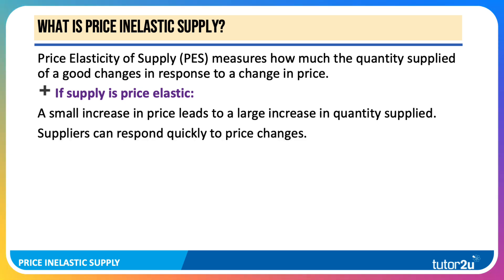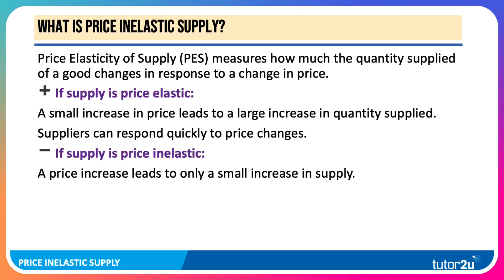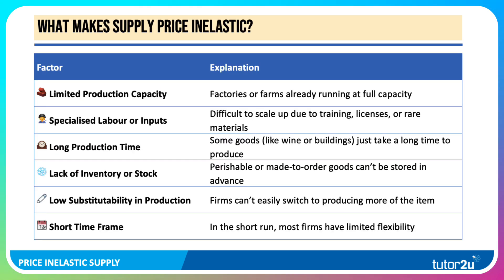Suppliers — they could be manufacturers — can respond quickly to price changes. Whereas when supply is price inelastic, the focus of this video, a price increase leads to only a small expansion in quantities supplied. Producers find it hard to increase or decrease production in the short term.